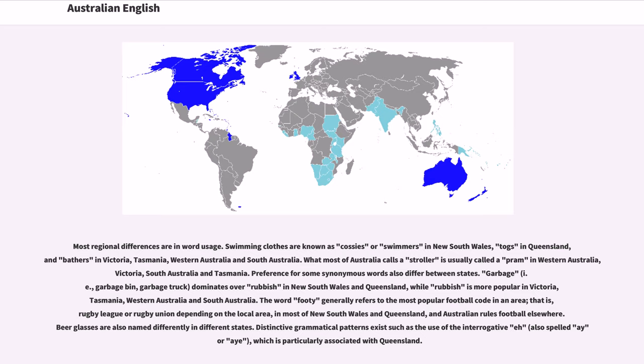Preference for some synonymous words also differ between states. Garbage, that is, garbage bin, garbage truck, dominates over rubbish in New South Wales and Queensland, while rubbish is more popular in Victoria, Tasmania, Western Australia, and South Australia.